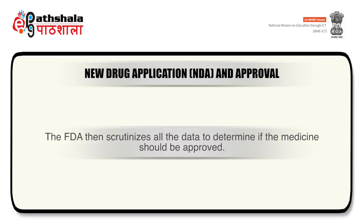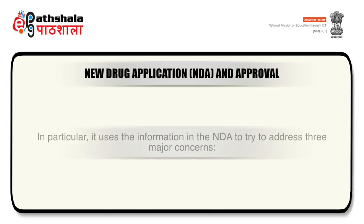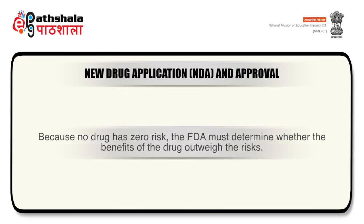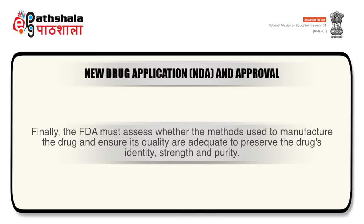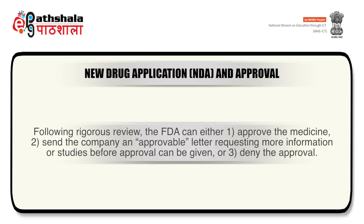The FDA then scrutinizes all the data to determine if the medicine should be approved. In particular, it uses the information in the NDA to address three major concerns: first, because no drug has zero risk, the FDA must determine whether the benefits of the drug outweigh the risk; second, based on its assessment of risk and benefit, the FDA must decide what information the package insert should contain to guide physicians; and finally, the FDA must assess whether the methods used to manufacture the drug and ensure its quality are adequate to preserve the drug's identity, strength, and purity. Following rigorous review, the FDA can either approve the medicine, send an approvable letter requesting more information, or deny the approval.